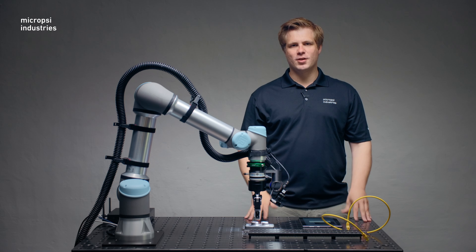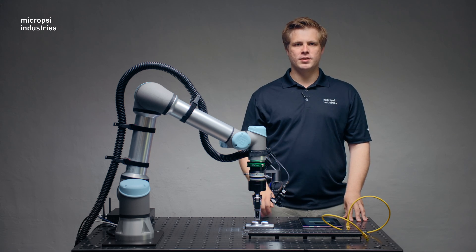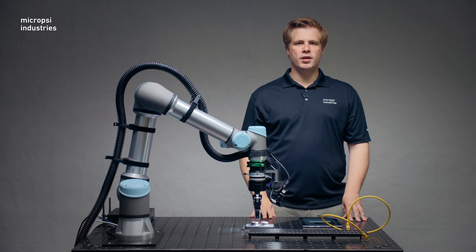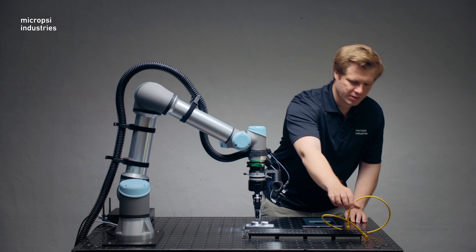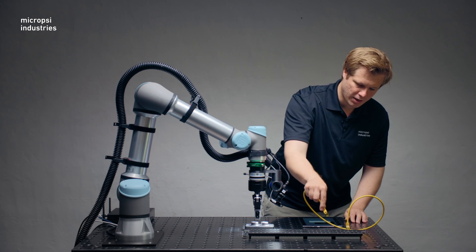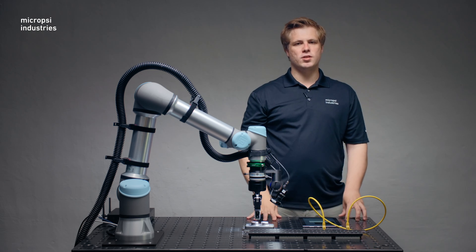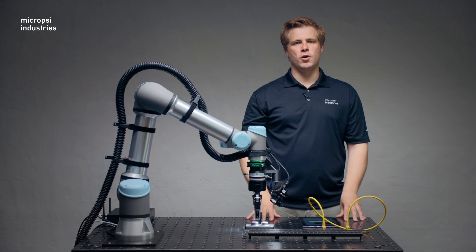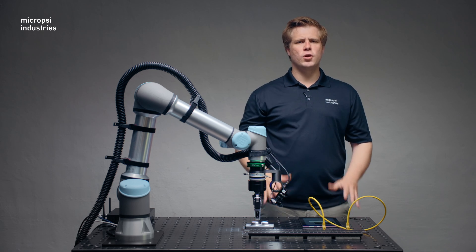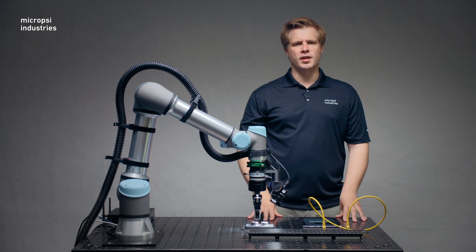For some automation tasks, you need to train multiple Mirai skills. Let's say you want to use Mirai to plug a cable into a socket. You can train one skill for grabbing the cable and another skill for plugging the cable into the socket. When you train an additional skill, you should adjust the exposure and gain in the app to ensure that the most important things stand out.